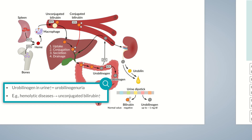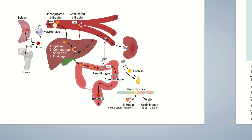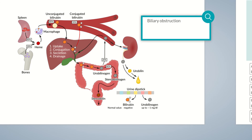Because urobilinogen is colorless, urine color isn't changed in urobilinogenuria. In addition, there are diseases that may lead to decreased urobilinogen in urine. One of these conditions is biliary obstruction — as a result, less bilirubin reaches the intestine and less urobilinogen is formed. Decreased urobilinogen levels can't be detected with the urine dipstick because the test strip only measures semi-quantitatively. However, this isn't usually necessary in a clinical setting, as cholestasis — in which bile is congested — can be diagnosed using laboratory parameters of cholestasis and imaging.